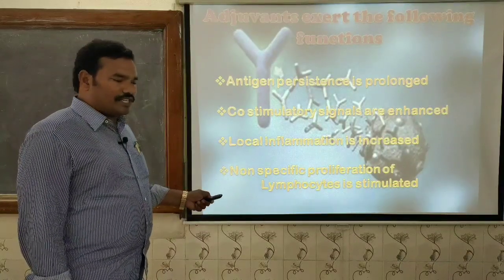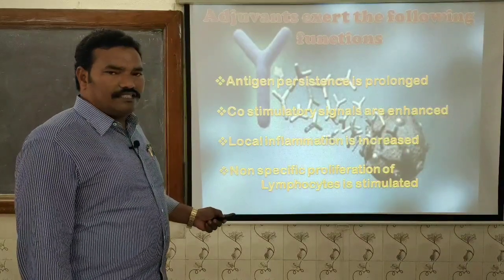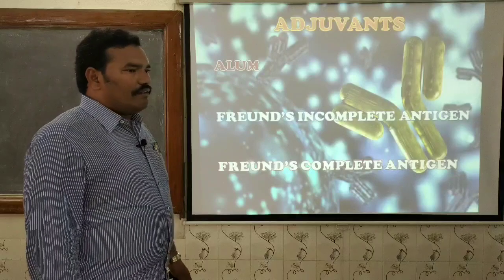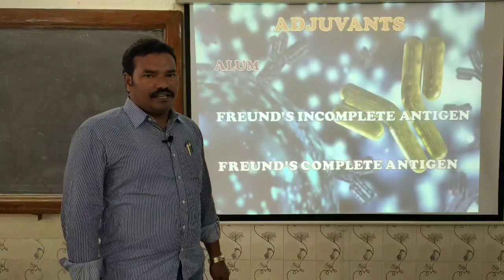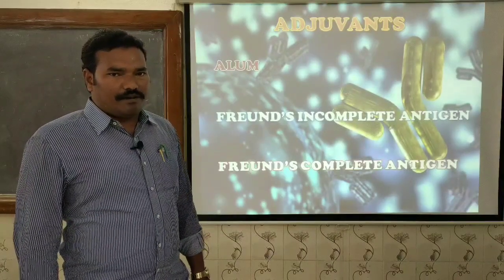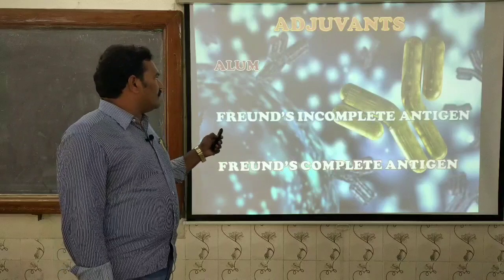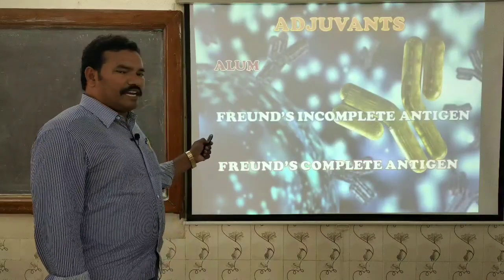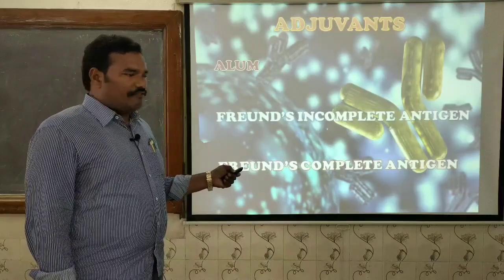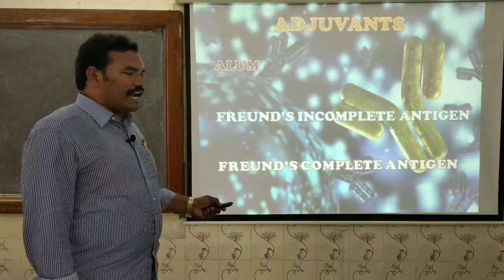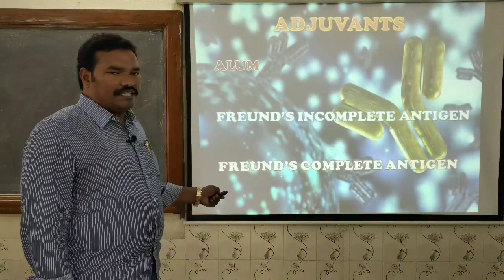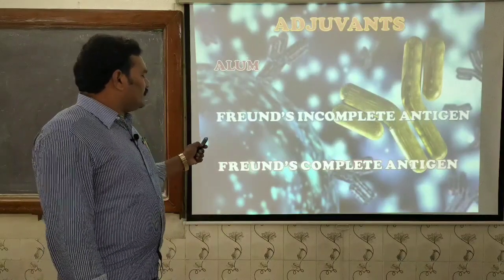To summarize the four effects: antigen persistence is prolonged, co-stimulatory signals are enhanced, local inflammation is increased, and non-specific proliferation of lymphocytes is stimulated. Coming to examples of adjuvants — the three best examples are: alum or alum precipitate, Freund's Incomplete Adjuvant (FIA), and Freund's Complete Adjuvant (FCA), which is a modified form of the incomplete adjuvant.